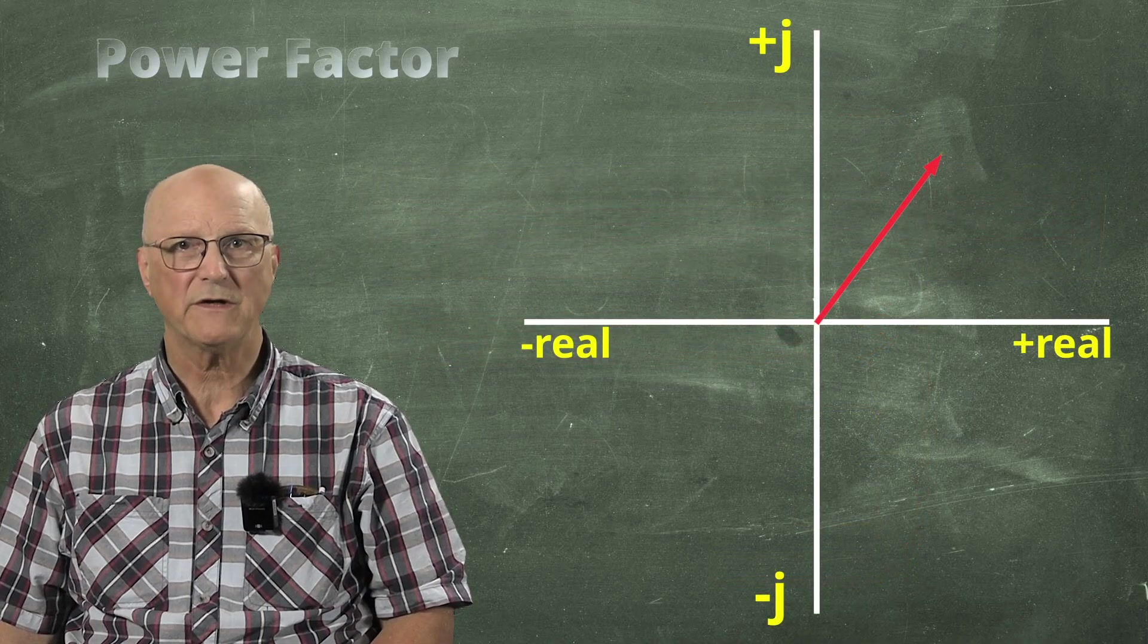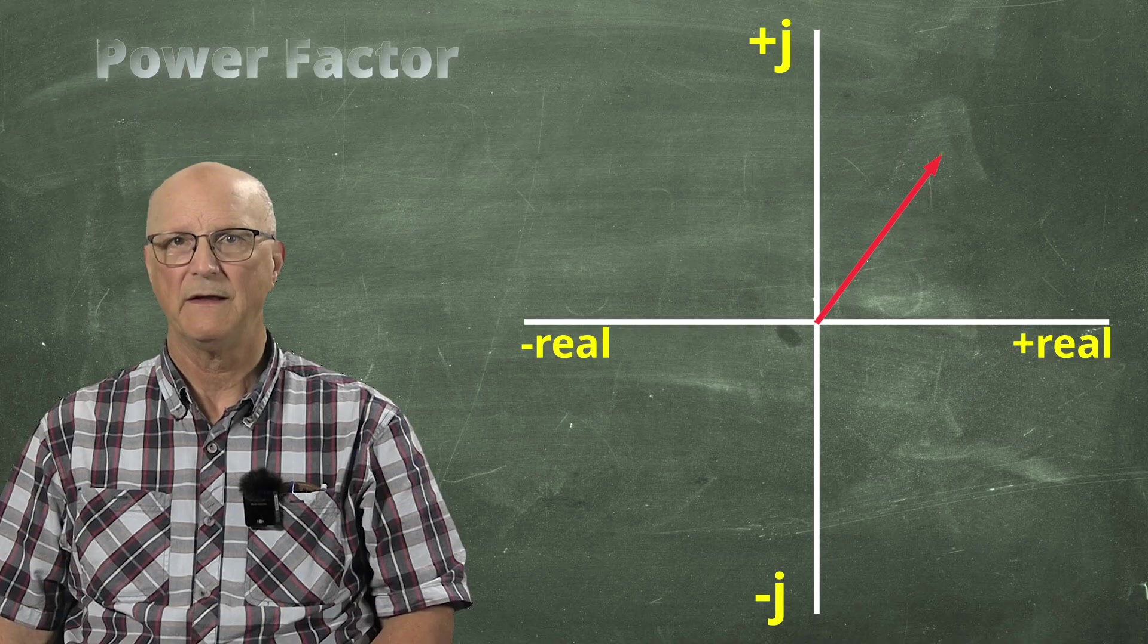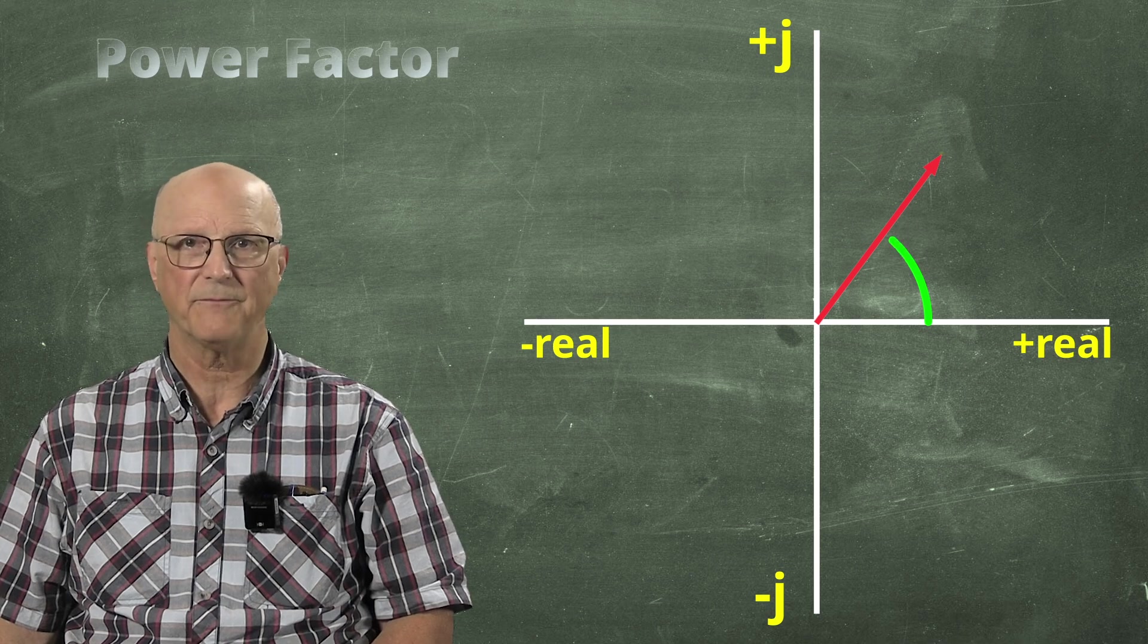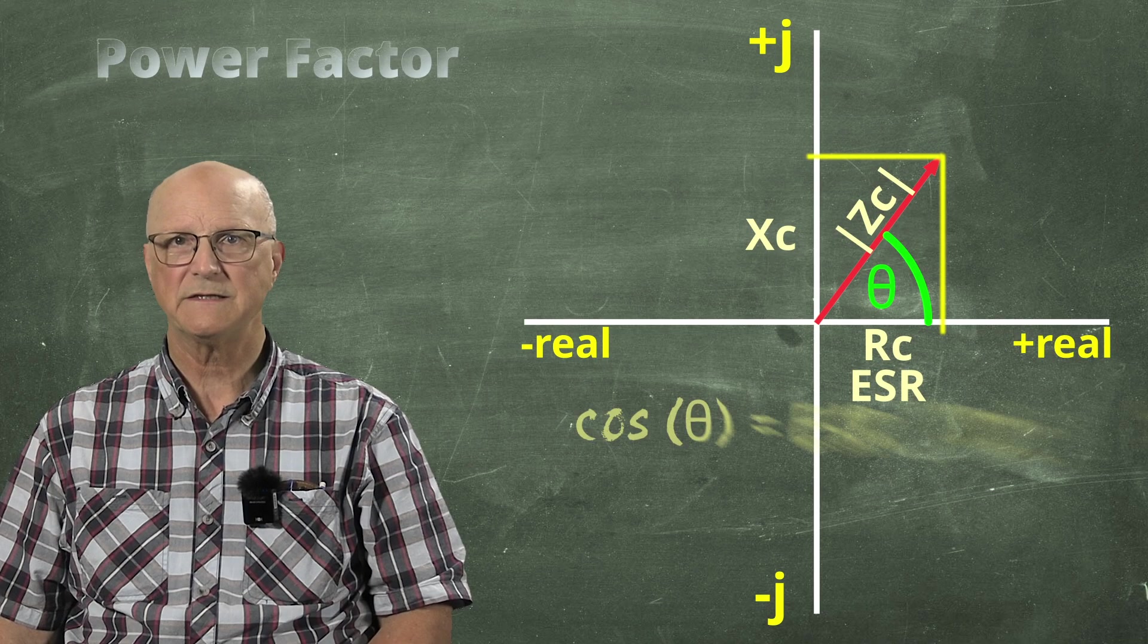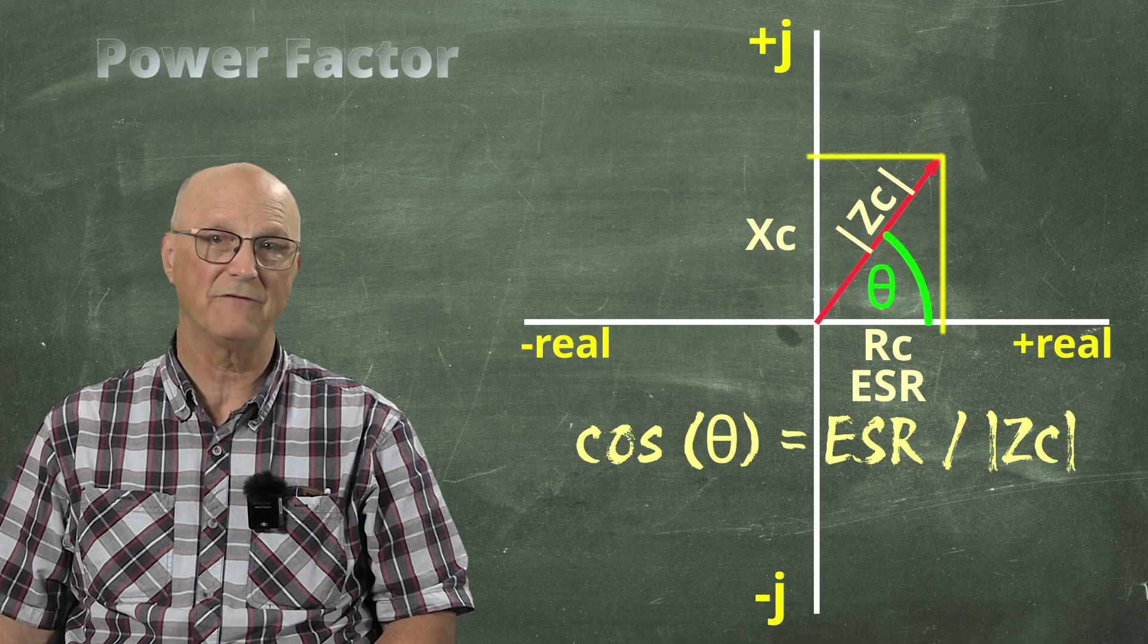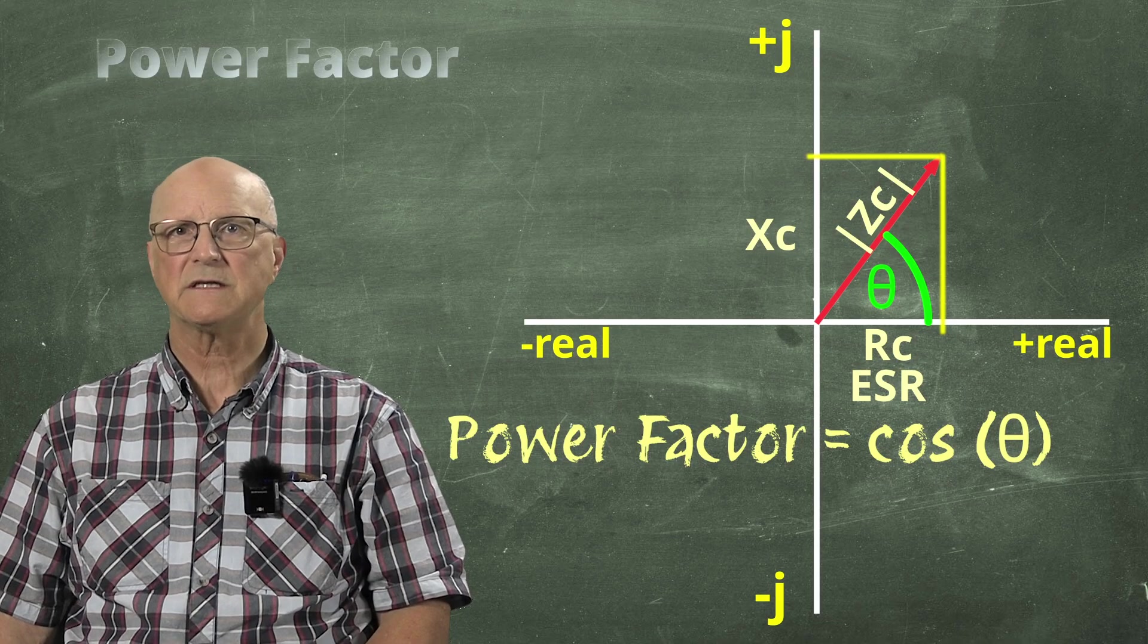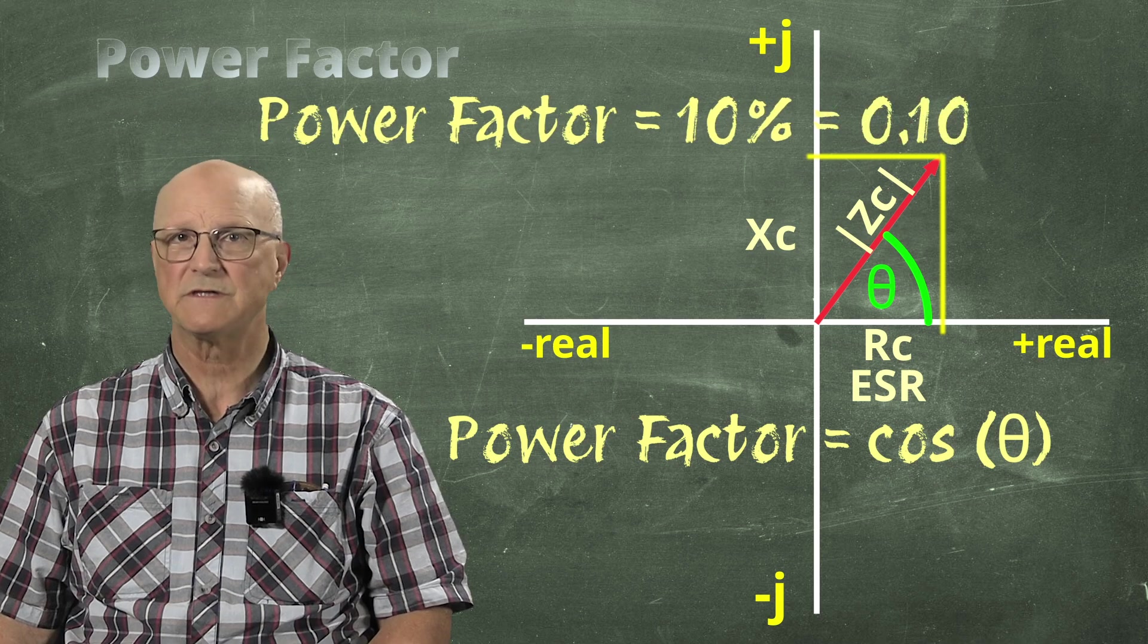Going back to our Cartesian coordinate system, we see the vector which represents the total current through the capacitor. This can also represent the magnitude of the impedance of the capacitor at this frequency. We consider the angle between the horizontal axis and the vector. I will call this theta. The cosine of this angle is equal to the ESR divided by the magnitude of the total impedance of the capacitor or the length of this vector. Thus, the power factor is equal to the cosine of the angle theta. Sometimes this is expressed as a percentage. A 10% power factor is the same as a power factor of 0.1.